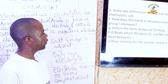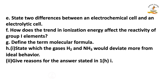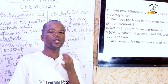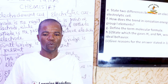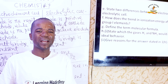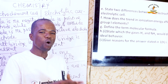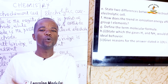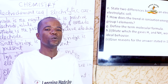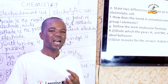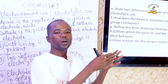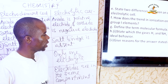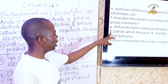Question 1G: Define the term molecular formula. Molecular formula is defined as the actual number of atoms of each element present in a molecule of a compound.